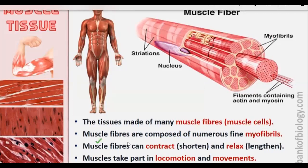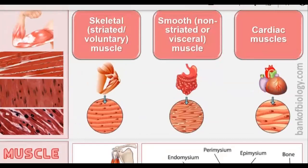Muscle fibers can contract — meaning shorten in length — and relax — meaning increase in surface area and lengthen up. Muscles take part in locomotion and movements. Locomotion means to move from one point to another point, while movement refers to the motion of specific body parts. Locomotion and movement are different things.